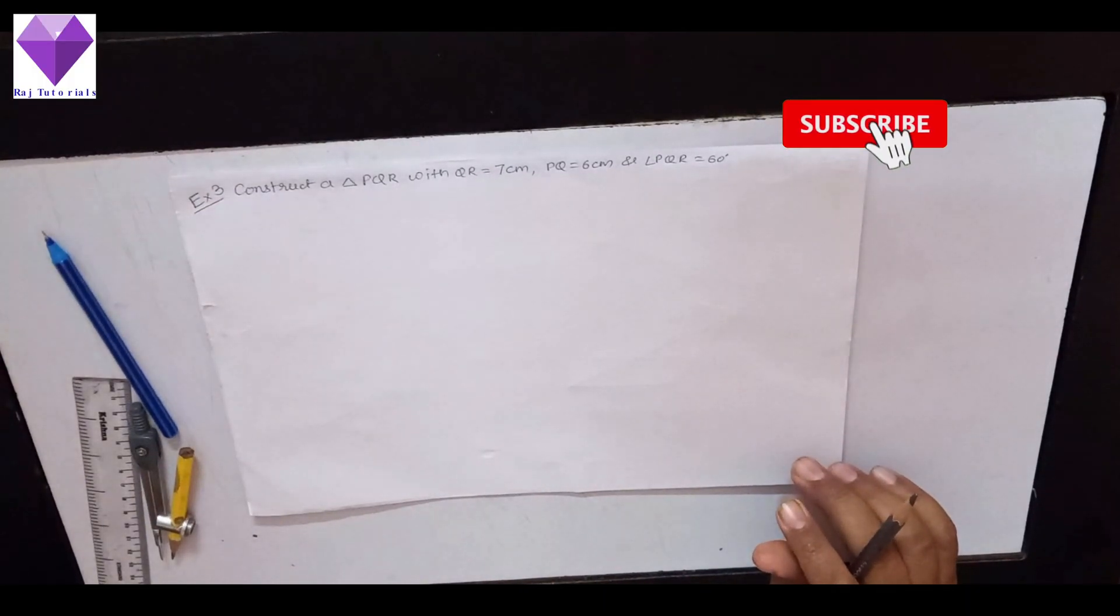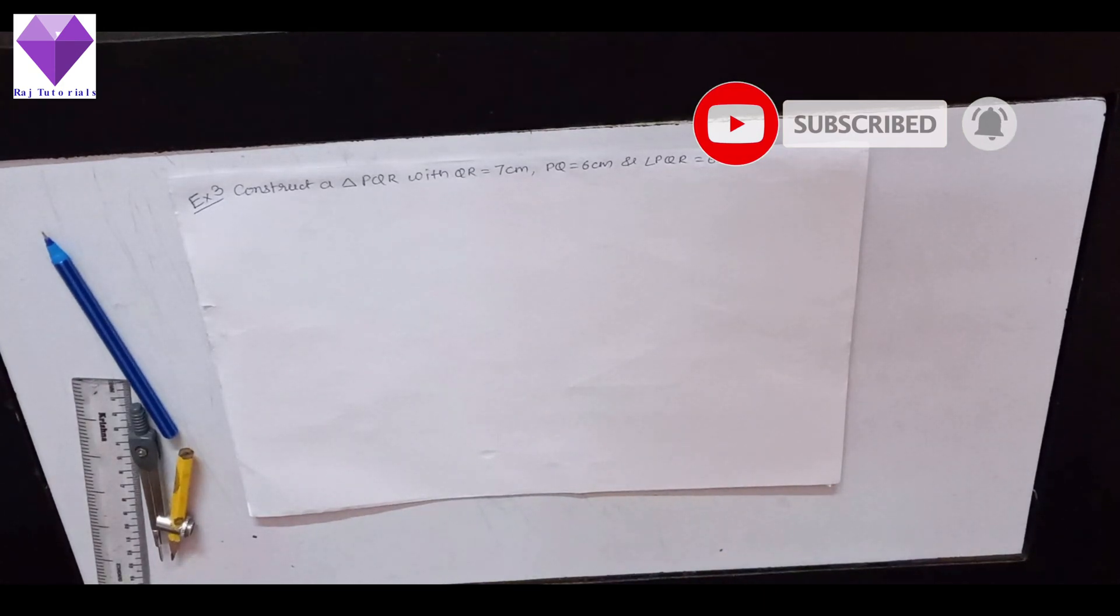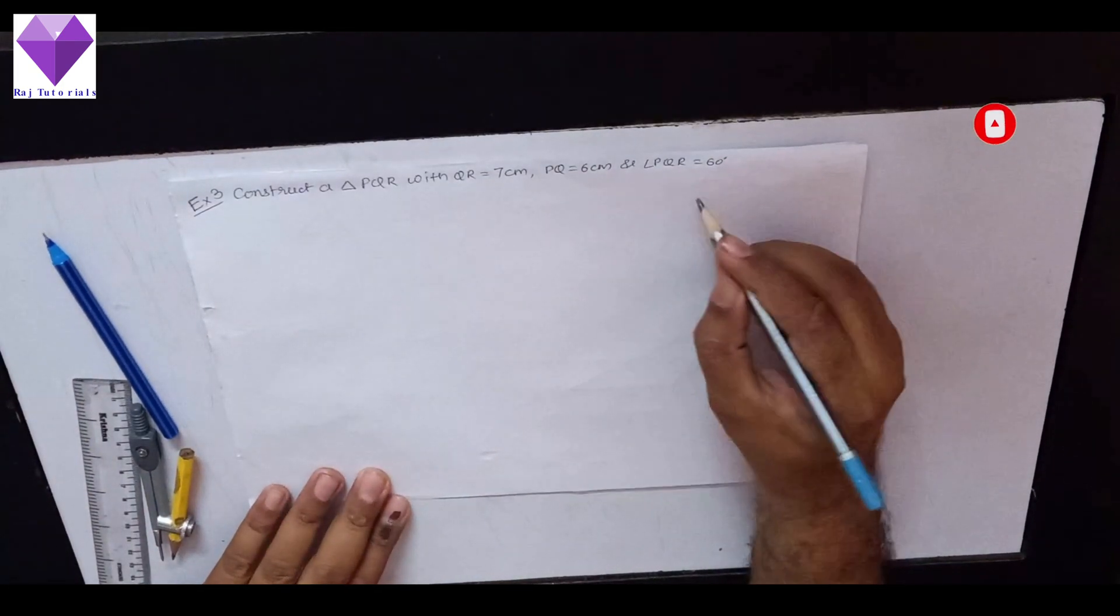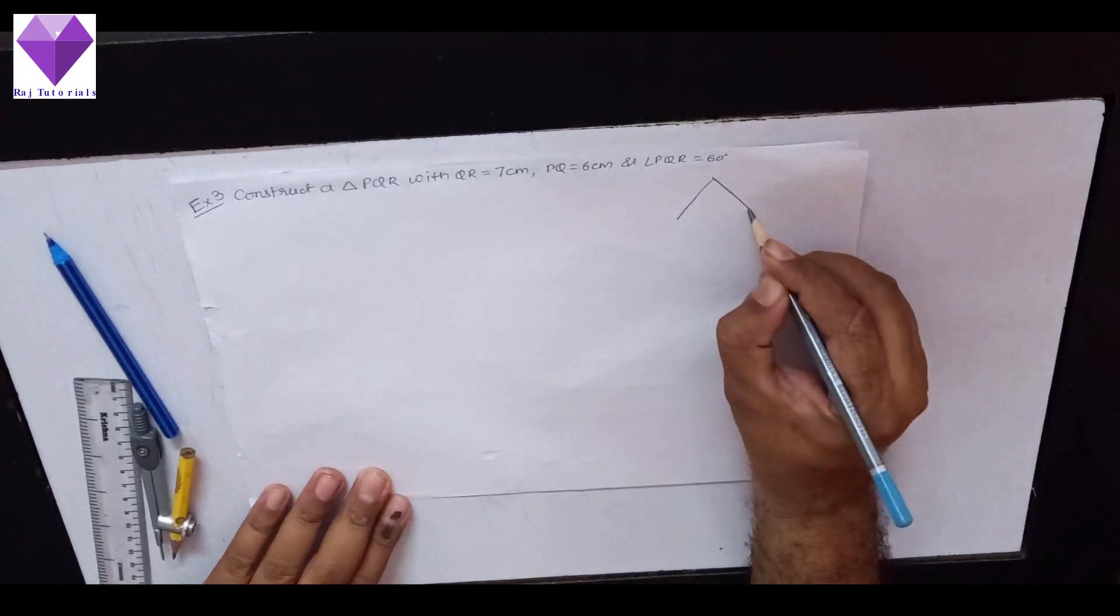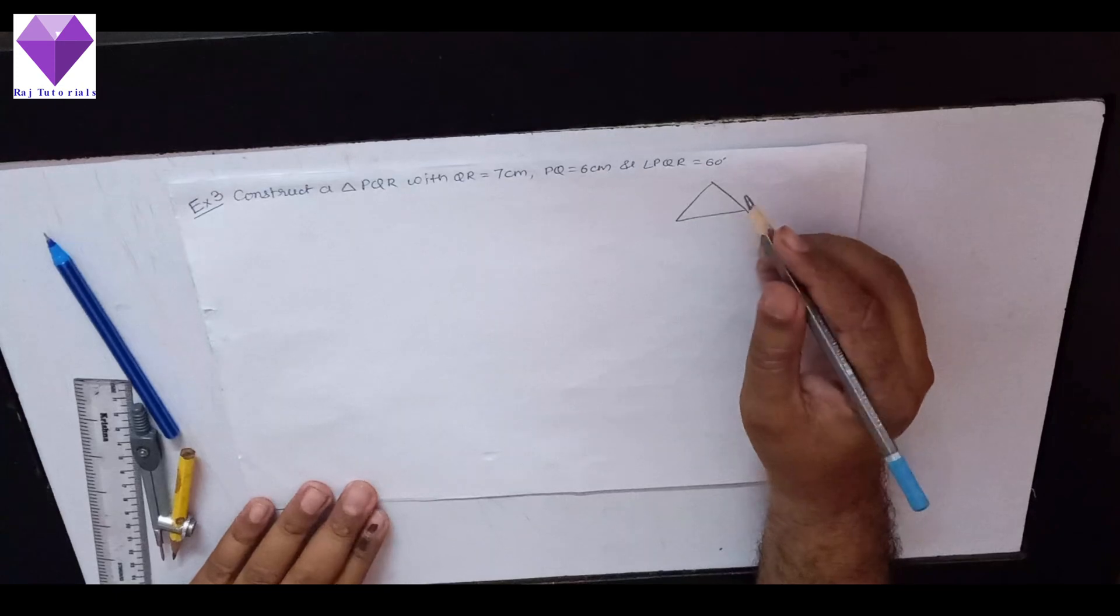Hello students, today we are going to construct a triangle PQR with QR equal to 7 cm, PQ equal to 6 cm and angle PQR equal to 60 degree.